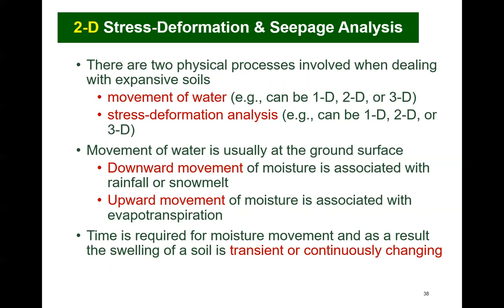The analysis for the prediction of heave is often more complex than just described. In reality, there are generally two physical processes involved when dealing with an expansive soil. The movement of water can be either in one, two, or three dimensions. The stress deformation analysis can also be one-, two-, or three-dimensional. Movement of water is usually from the ground surface — downward movement comes from rainfall or snowmelt, and upward movement is associated with evaporation and evapotranspiration. Time is required for moisture movement, and as a result, the swelling of a soil is a transient problem with continuously changing stress state conditions.